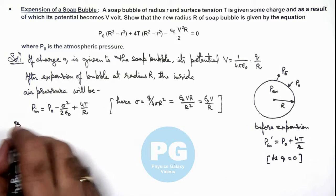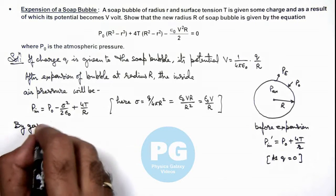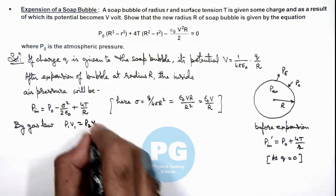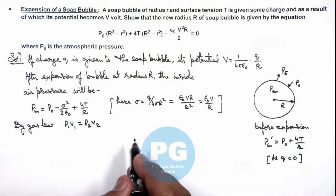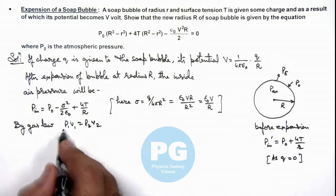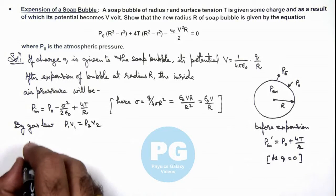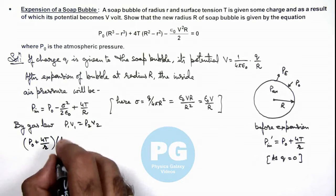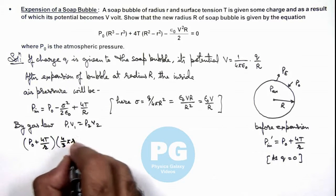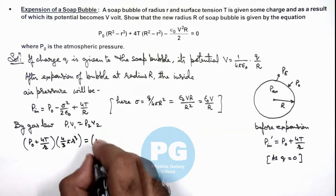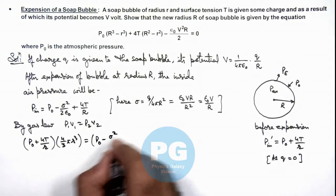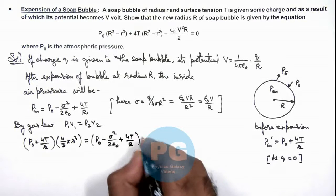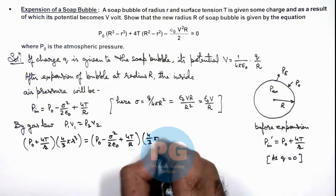So we can write now by gas law, P₁V₁ = P₂V₂, as we are assuming the temperature of inside air to be at constant value. So initially the pressure was P₀ + 4T/r and the volume of air bubble was (4/3)πr³. Finally the pressure changes to P₀ - σ²/(2ε₀) + 4T/R, and the volume is taken as (4/3)πR³.